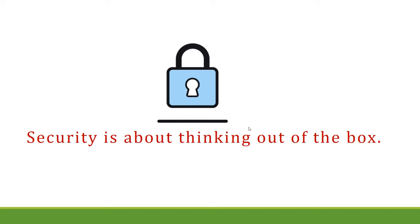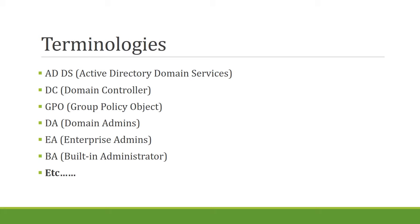Now let's look at some common terminologies we will be using — there will be many, but the most common ones are: ADDS (Active Directory Domain Services), Domain Controller, GPO, DA (Domain Admin), EA (Enterprise Admin), BA (Built-in Admin). If you are already working as a Windows administrator you should already be aware of these terminologies.